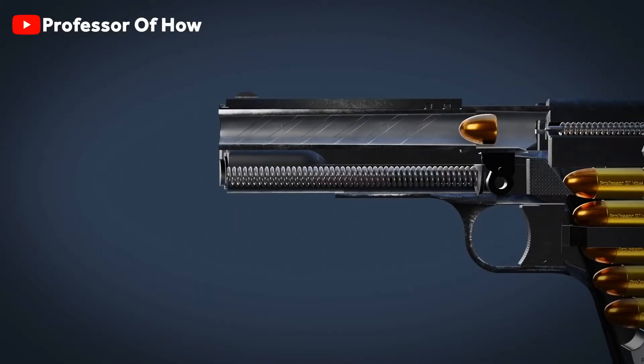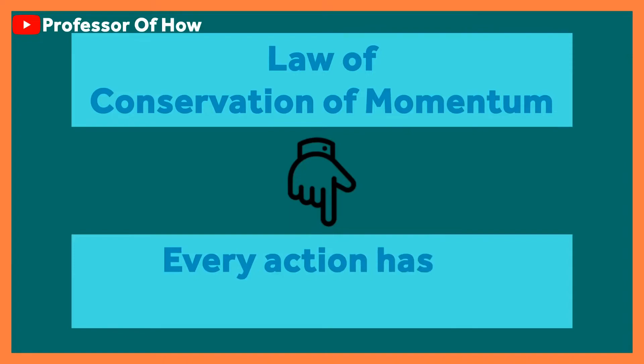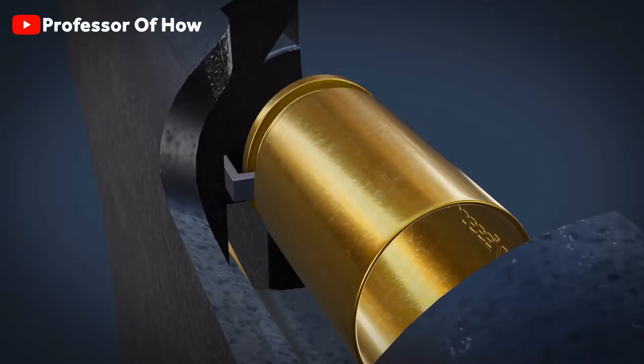Anyways, now since the gun also needs to take care of the law of conservation of momentum, the slide will go back because the bullet has moved forward.